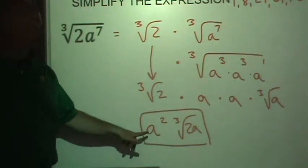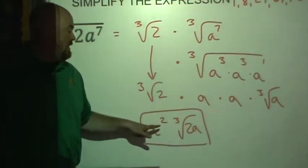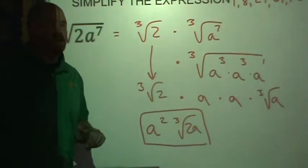So it looks a bit odd when you write it like this, a squared and a cubed root of 2a. I don't really have any advice for keeping that straight. Just be careful with your notation when you're writing these out.